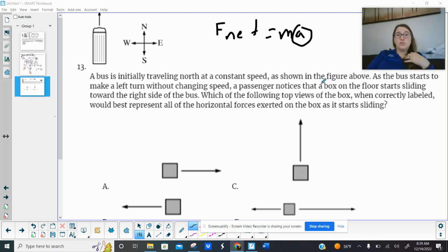So you've got to be careful here. So it says, which of the following top views of the box represent all the horizontal forces? So we're basically ignoring the normal force and gravity. Horizontal forces side to side.